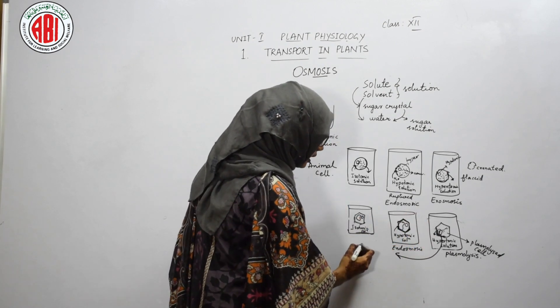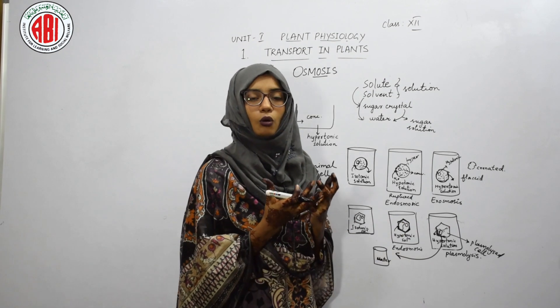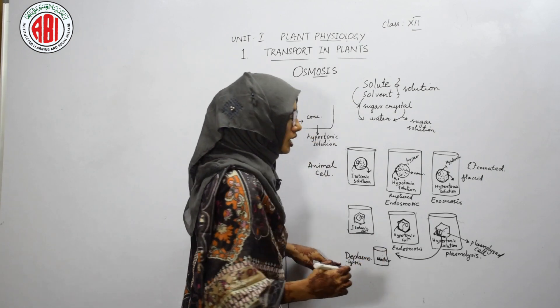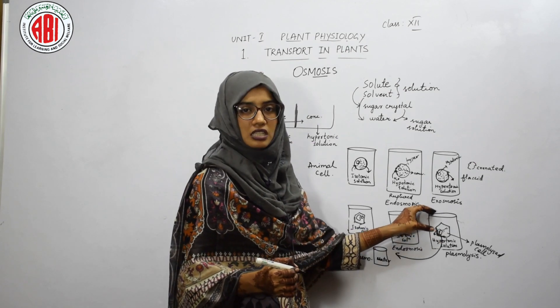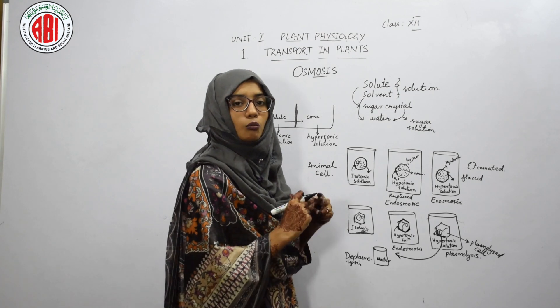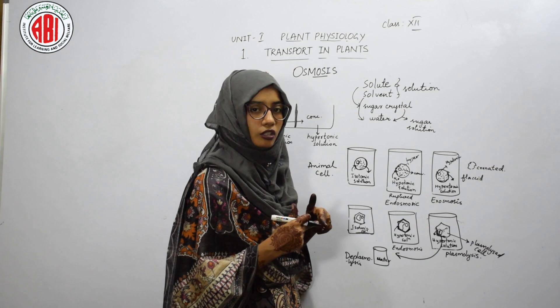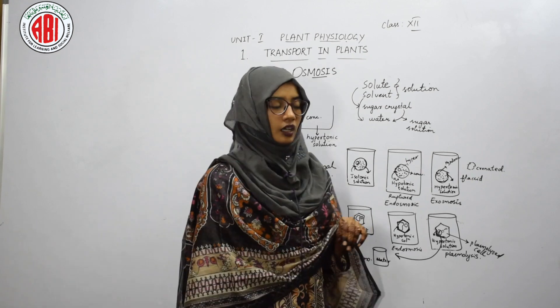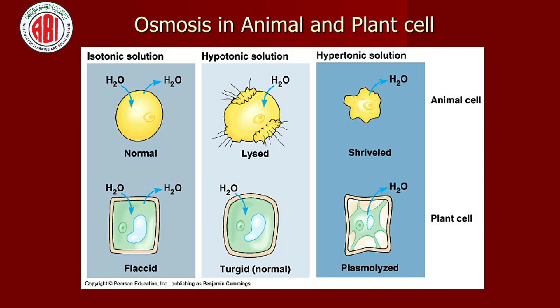When we take out this plasmolyzed cell and place it again in hypotonic solution, the cell regains all its water. This process is called deplasmolysis — where the plasmolyzed cell is placed in hypotonic solution so water moves back in and the shrinkage is recovered. In case of animal cells, one situation causes rupture and the other changes cell shape due to the absence of cell wall. But in plant cells, the cell wall prevents rupture during endosmosis and prevents shape change during exosmosis.